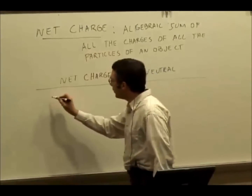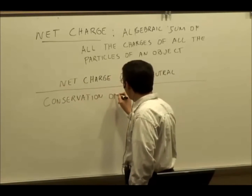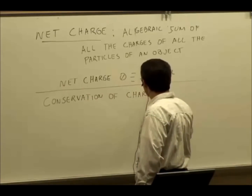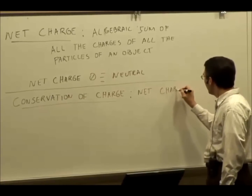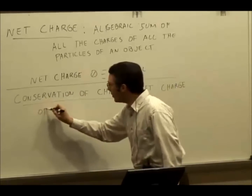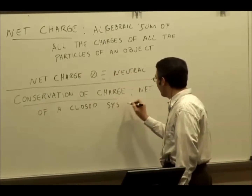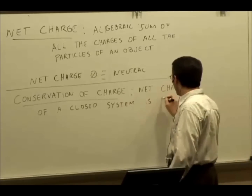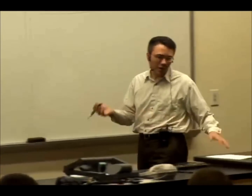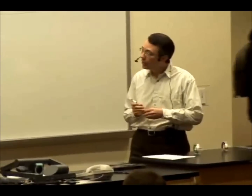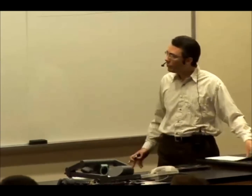Another idea we want to introduce is the idea of conservation of charge, which is the idea that the net charge of a closed system is conserved — it stays constant. Sometimes we say net charge can neither be created nor destroyed; it always stays the same. So the net charge of a closed system, like the universe, would stay the same.